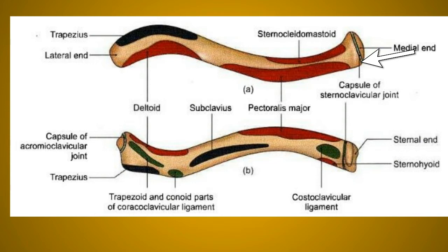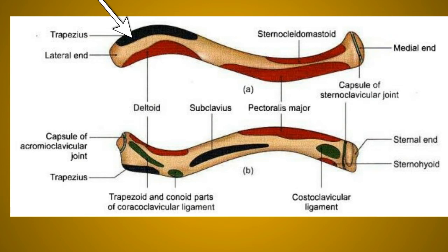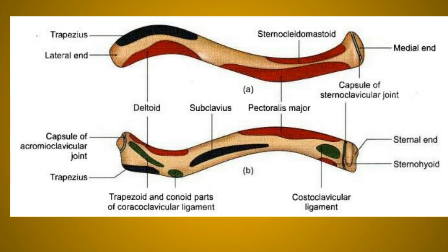The lateral one-third of the shaft gives attachment to three main structures: the anterior border of the lateral one-third gives origin to the deltoid muscle; the posterior border gives insertion to the trapezius muscle; and the conoid tubercle and trapezoid ridge give attachment to the conoid and trapezoid parts of the coracoclavicular ligament respectively.